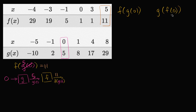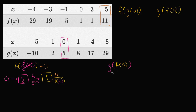Now let's evaluate g of f of zero. The key realization is you want to go within the parentheses and evaluate that first, so you can then evaluate the function on the outside. Here we're going to take zero as an input into the function f, and then whatever that is — that f of zero — we're going to input into our function g. The output of that is going to be g of f of zero.